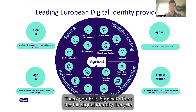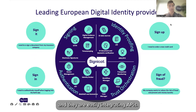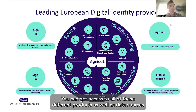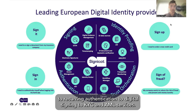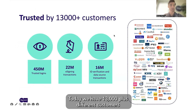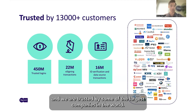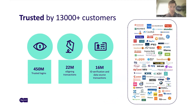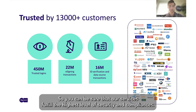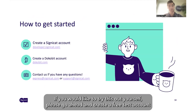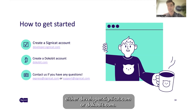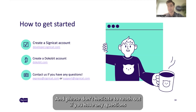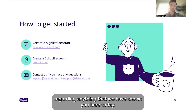Thank you, Erik. Signicat offers the full digital identity life cycle through easily integrated APIs. You can get access to all of these different products as well as data sources to help you and your customers with anything from onboarding, to recurring authentication, to digital signing, to KYC and AML services. Today we have 13,000 plus different customers and we are trusted by some of the largest companies in the world. We handle many millions of transactions each month, so you can be sure that our services fulfill the highest level of security and compliance. If you would like to try this out yourself, please go ahead and create a free test account and visit us at developer.signicat.com or docubit.com. Please don't hesitate to reach out if you have any questions regarding anything we have shown you today. Thank you.